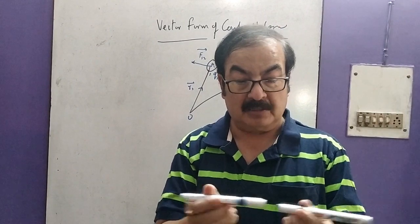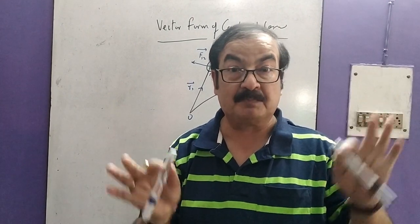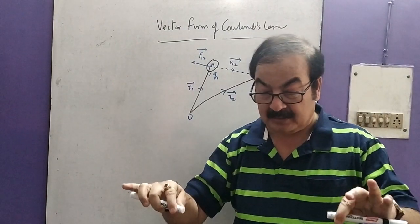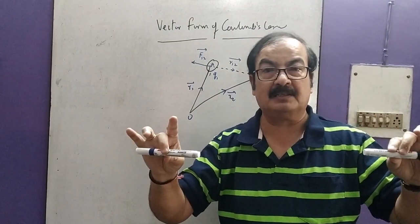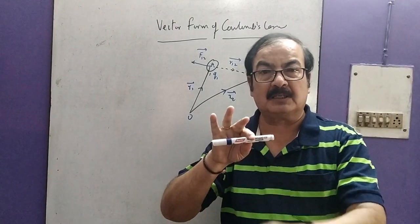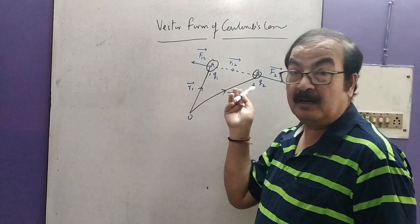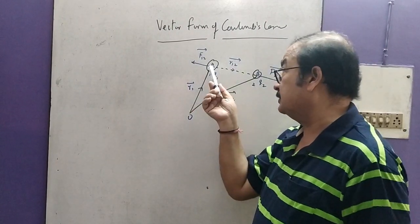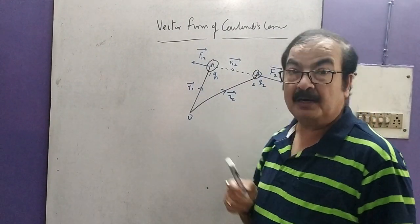In both cases, if they are charged particles, there is naturally some electrostatic force. The instantaneous distance between them is R — from the center of one to the center of the other. Its position vector with respect to a fixed point is R1, and the position vector of the other with respect to that same point is R2. These are just point charges: this is Q1 and this is Q2, with position vectors R1 and R2 respectively.